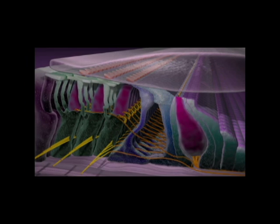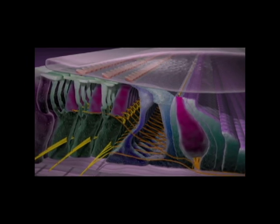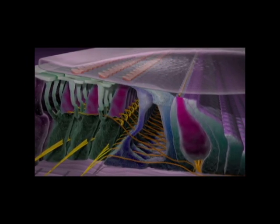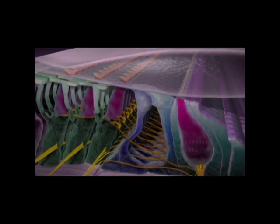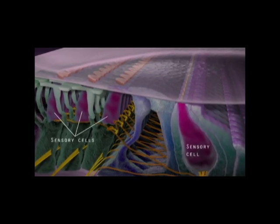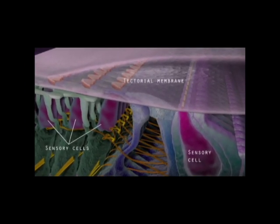The basilar membrane supports the sensory structure of the cochlea, the organ of Corti, which consists of sensory cells, support cells, and the gelatinous tectorial membrane.